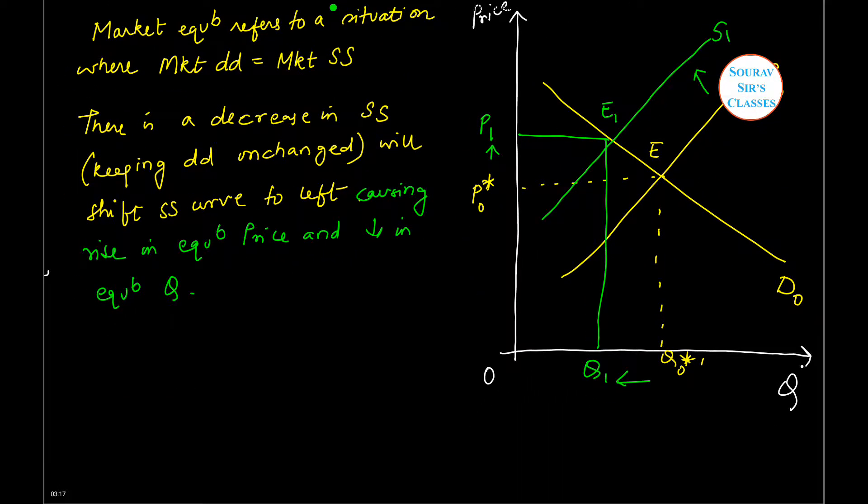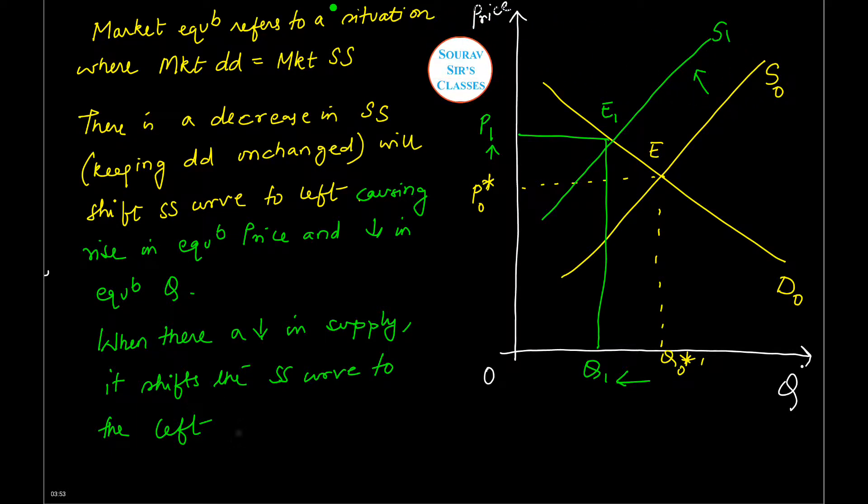Now there is another way to represent this. The other way is that when there is a fall in supply or decrease in supply, it shifts the supply curve to left, to S1. So it is getting shifted to the left and to S1.